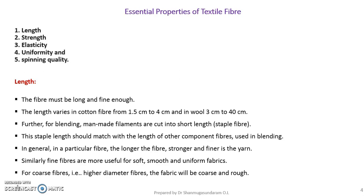Fine fibers are most suitable for producing soft, smooth, and uniform fabrics, whereas coarser fibers will produce fabric that is coarser and rough in nature. A good example is shirting material, which is finer in quality, whereas bed sheet material is coarser in quality — the fibers used for bed sheets are coarser, and those used for shirt material are finer.